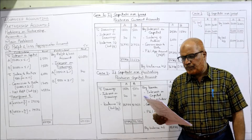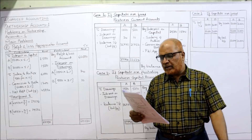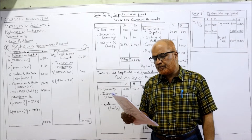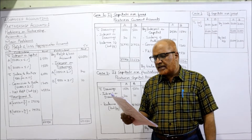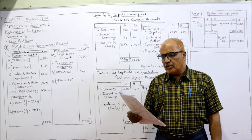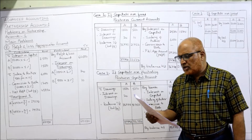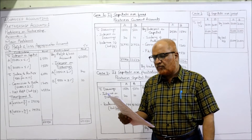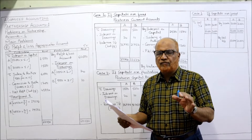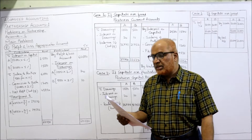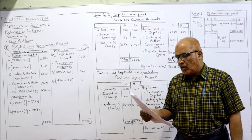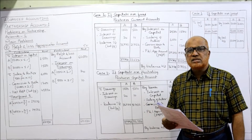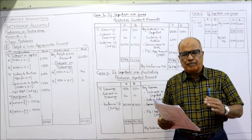Profits and losses are to be shared in the ratio of 3:2. Interest on capital is to be allowed at 5% per annum. Interest on drawings is to be charged at 2% per annum. Mr. Author is to get a salary of 500 per month. Mr. Book is to get a commission at 2% on the net profits of the firm before charging any of the above adjustments.